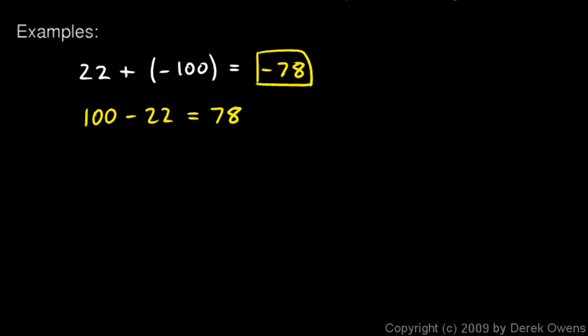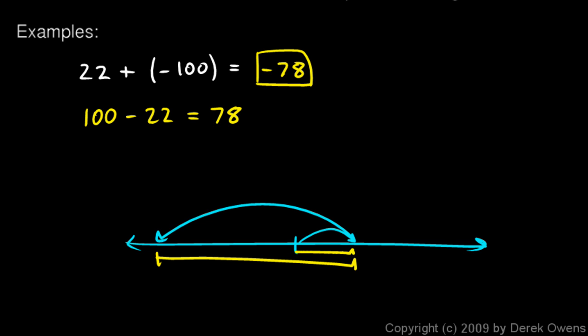Now if you want to picture that, and you don't have to draw this, but you should be picturing something like this in your mind. You're starting at 0, and the 22 plus negative 100 means you go 22 to the right and then negative 100 to the left. So if this length right here is 100, and that length right there is 22,